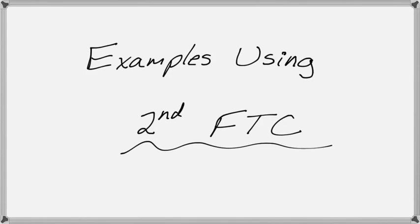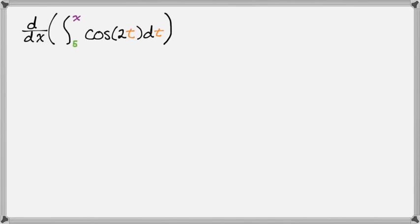In this video we are going to run through some examples of using the second fundamental theorem of calculus. I'm assuming you know what the second fundamental theorem of calculus is, so I'm just going to do the examples but I'll be walking through it as I do them. First example: we want the derivative with respect to x of the integral from 5 to x of cosine of 2t dt.